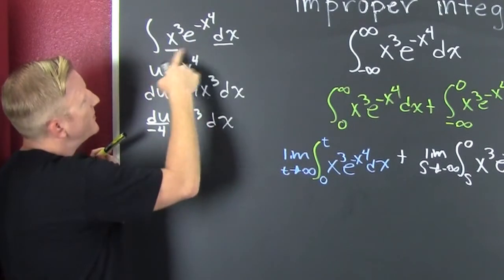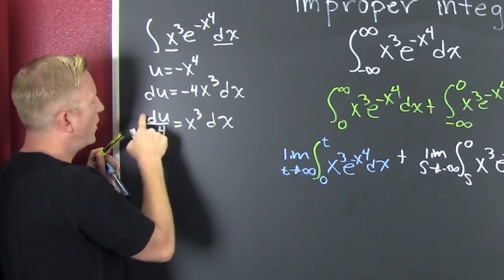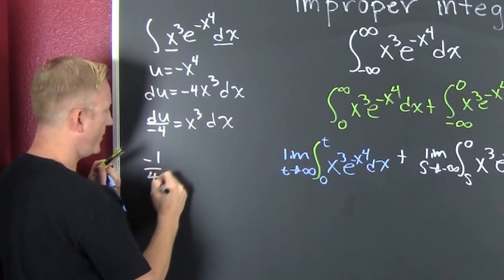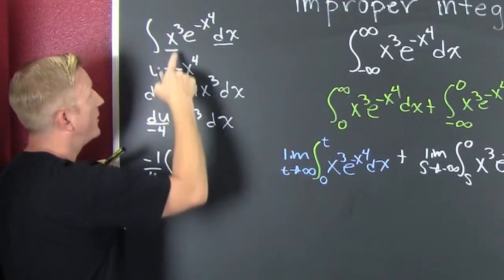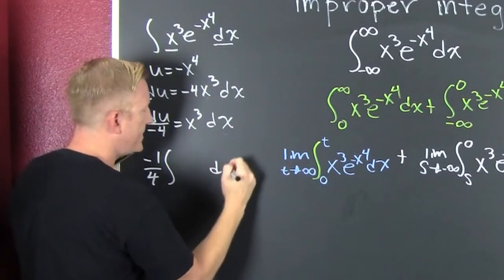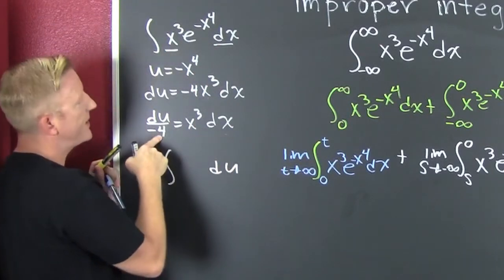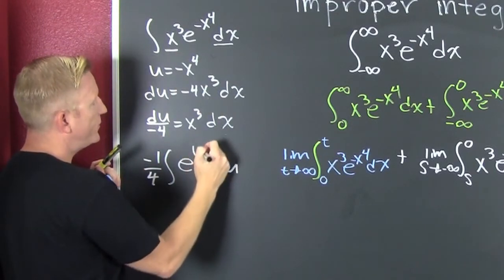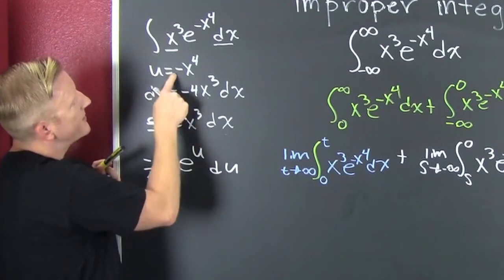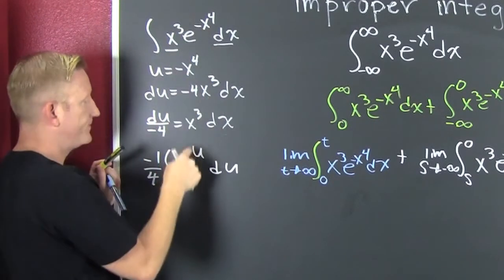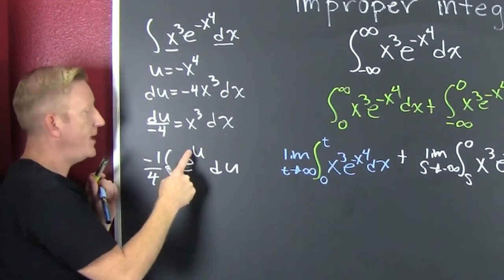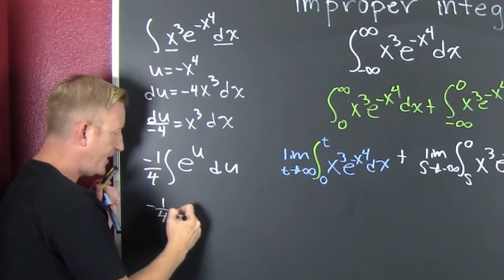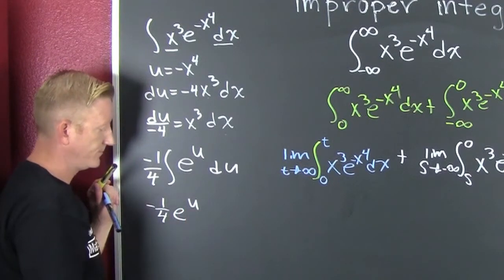Making our substitutions — x to the third dx is du over negative four. So I'm going to write minus one fourth outside the integral of e to the u du. The x to the third dx piece is taken care of, and we have e to the u since minus x to the fourth is u. So integrating that gives us minus one fourth e to the u.